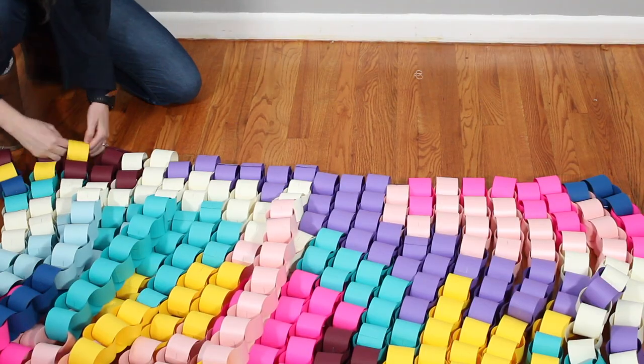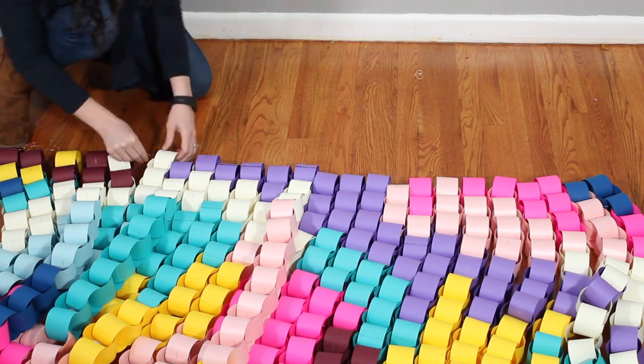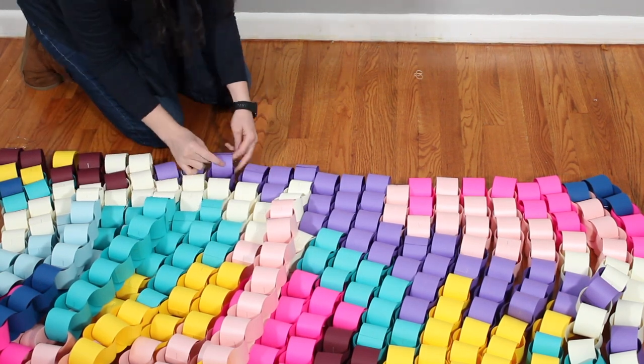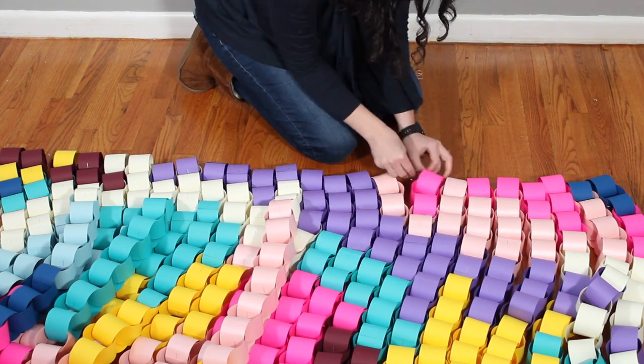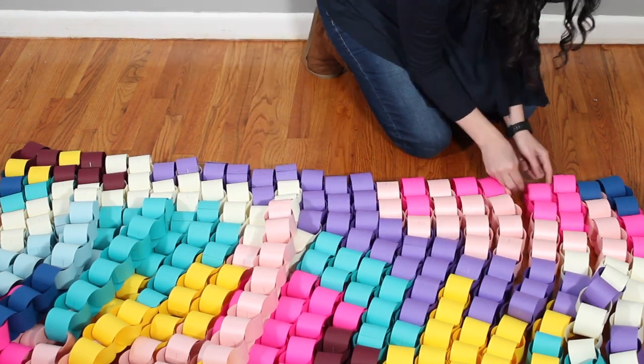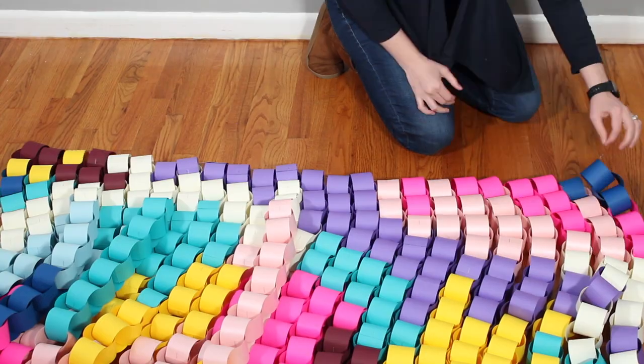I'm using fishing line to string all of my chains together and hang them on the wall with. I've gone ahead and put a loop onto each end of my fishing line and it's already to the exact length I need to hang on the wall. So I'm just going to string it through the top loop of each chain and then I will be ready to hang it.